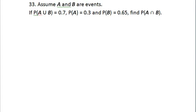Assume A and B are events. If the probability of A union B is 0.7, the probability of A is 0.3, and the probability of B is 0.65, find the probability of A intersect B.